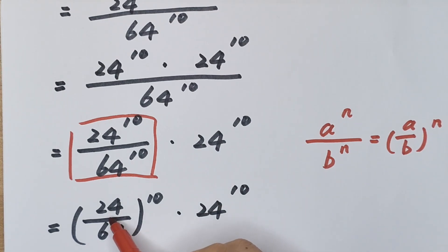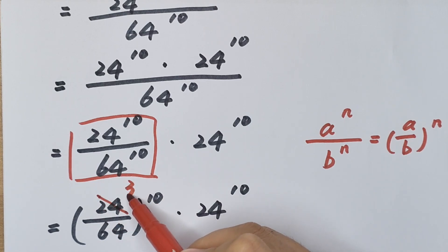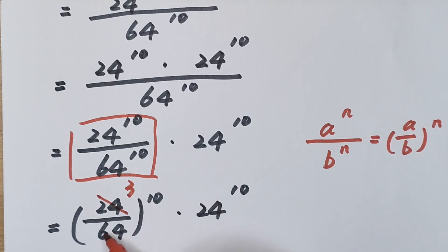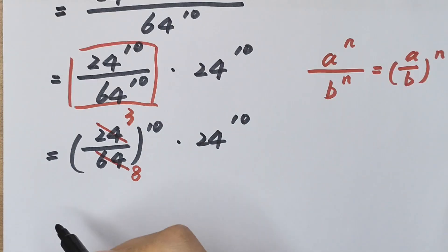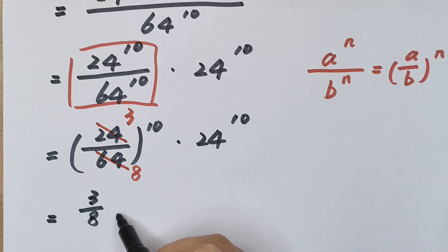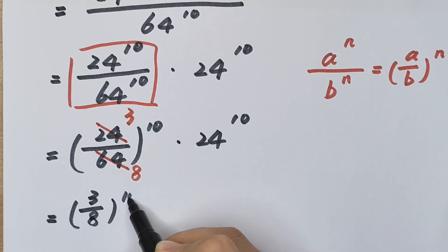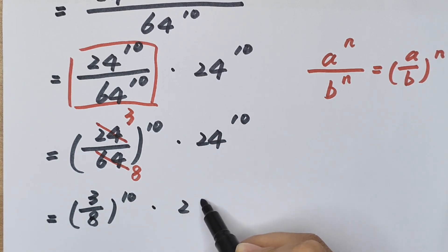We simplify 24 divided by 64: dividing both by 8 gives 3 divided by 8. So we have 3 divided by 8, in brackets, to the power of 10, times 24 to the power of 10.